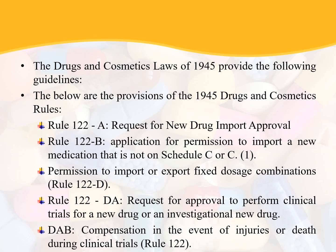The provisions of the 1945 Drugs and Cosmetic Rules include: Rule 122A — the request for new drug import approval; Rule 122B — the application for permission to import a new medication not on Schedule C or C1; Rule 122D — the permission to import or export fixed dosage combinations; Rule 122DA — the request for approval for clinical trials for a new drug or an investigational new drug; and Rule 122DAB — compensation in the event of injuries or death during clinical trials.